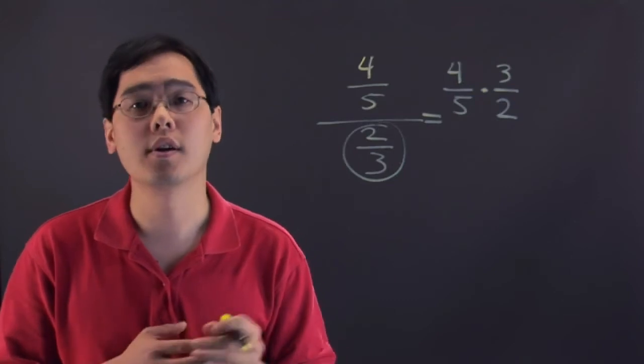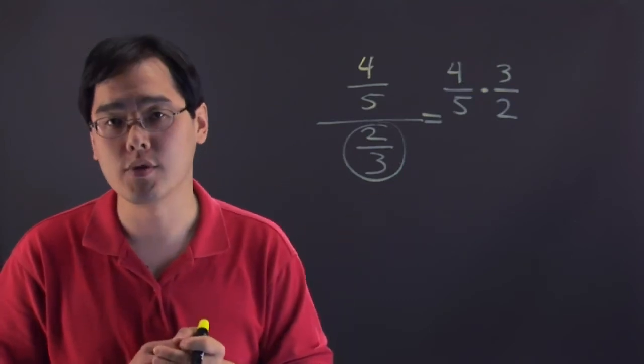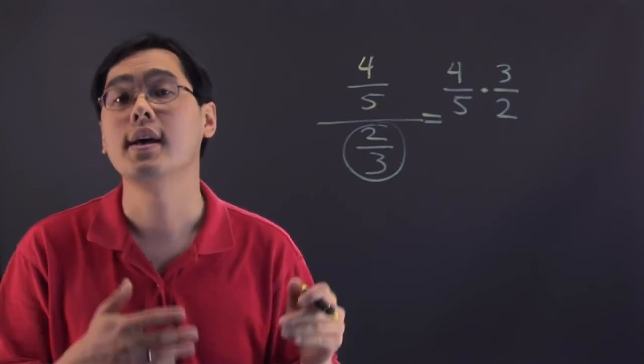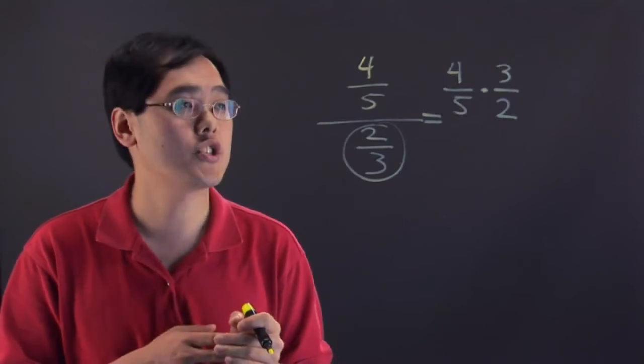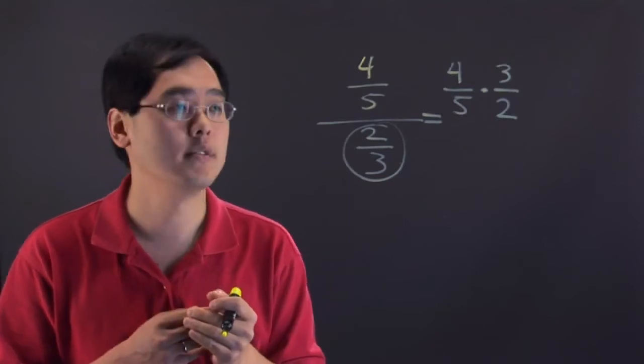Now at this particular point you can either multiply first and reduce later, or you can reduce along the way and then multiply. Whatever is easier. But let's just go ahead and cross cancel, as they say.